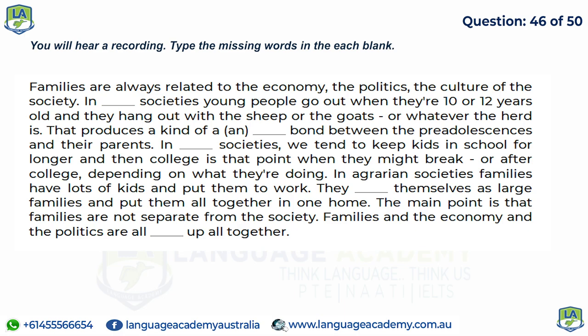Families are always related to the economy, the politics, and the culture of their society. In herding societies, young people go out at 10 or 12 years old to tend sheep or goats, producing a loose bond between pre-adolescents and their parents. In industrial societies, we keep kids in school longer, and college or post-college is when they might break away. In agrarian societies, families have lots of kids, put them to work, and structure themselves as large families all in one home. The main point is that families are not separate from society — families, economy, and politics are all wrapped up together.